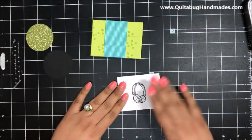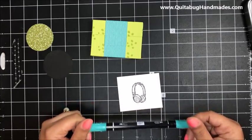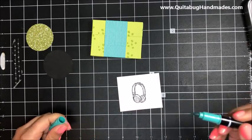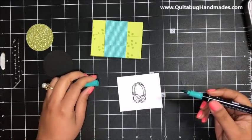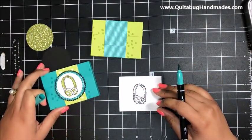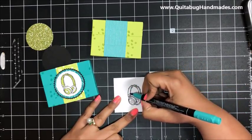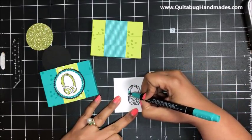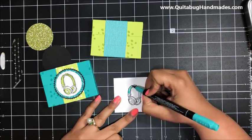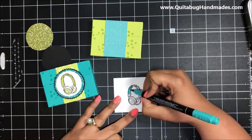Now I'm going to go back to my little headphones and bring in my Bermuda Bay Stampin' Write marker. I was so excited to use the Stampin' Write markers because I've kind of neglected them since the blends came out. I need to show the Stampin' Write markers some love. I was excited to use these, and these are in our annual catalog.